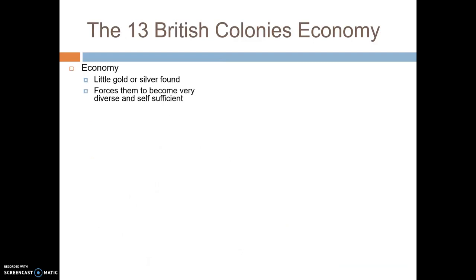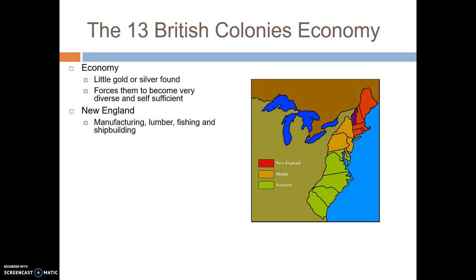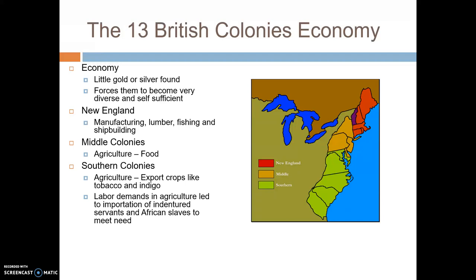The economy of the British colonies developed very differently from New Spain. Very little gold and silver was found, which forced the British colonists to become very diverse and self-sufficient. Three different economic regions developed. The first was New England — the states of Maine, New Hampshire, Massachusetts, Rhode Island, and Connecticut — which specialized in manufacturing, lumber, fishing, and shipbuilding.